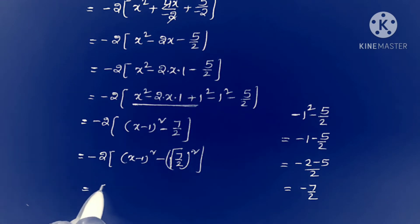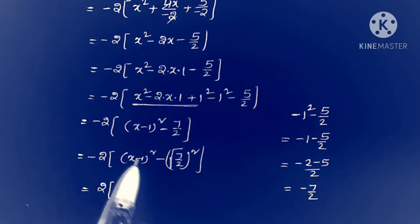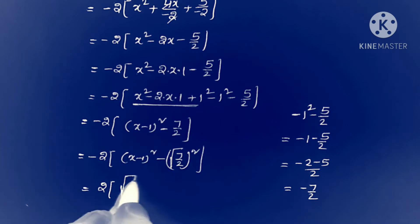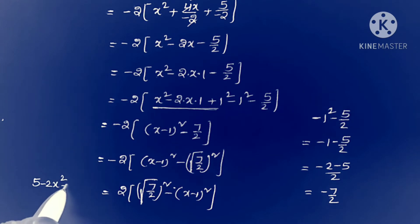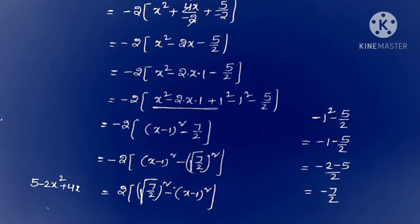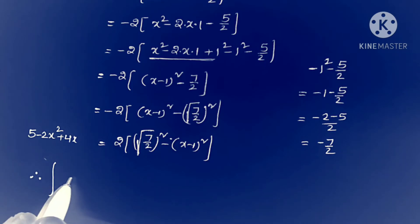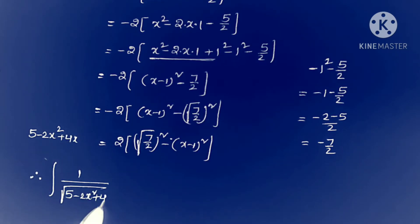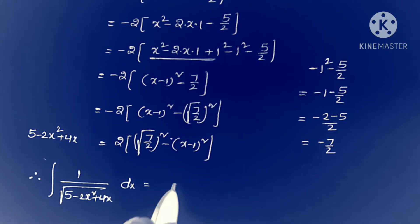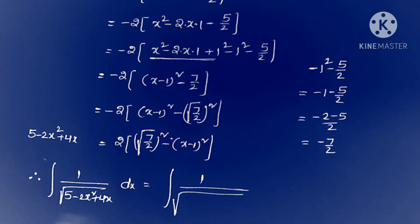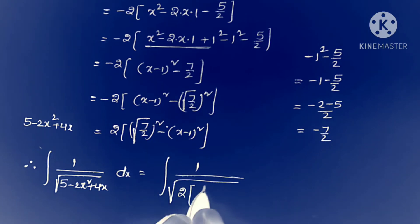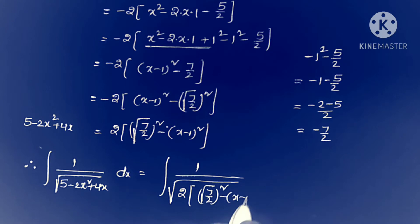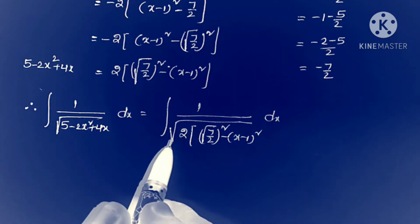Now, 7 by 2 equals (root 7 by 2) whole squared. Applying the minus sign, the two terms become reversed: that is (root 7 by 2) whole squared minus (x minus 1) whole squared. Substituting this value into the given problem — integral 1 by square root of 5 minus 2x squared plus 4x — we get 2 into (root 7 by 2) whole squared minus (x minus 1) whole squared, times dx.